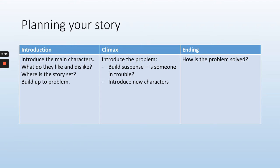Fantastic! So now you should have the headings introduction, climax and ending on your page. Firstly, you're going to write one or two sentences about what happens at the beginning of the story. Remember, the boy has just found his father at his grandmother's place. He comes home with his dad — what happens? You have to introduce your main character. What does the main character like or not like? Where is your story set? Does he come home and tell his mum about all the characters he's seen in the story? On your page now in the introduction column, write one or two sentences about what happens at the beginning of your story. Press pause while you do that and then press play when you're ready to keep going.